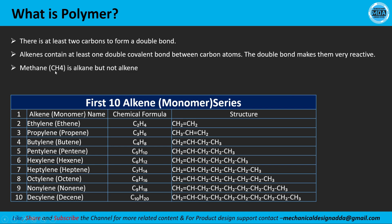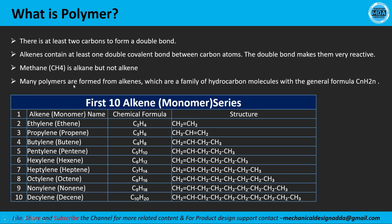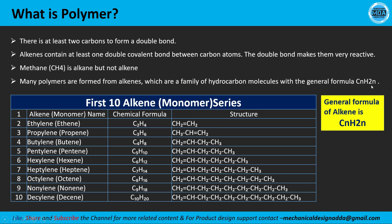Methane is written as CH4 and is an alkane, not an alkene, so it is not listed here. Many polymers are formed from alkenes, which are a family of hydrocarbon molecules with the general formula CₙH₂ₙ. This is the general formula for monomer alkenes.